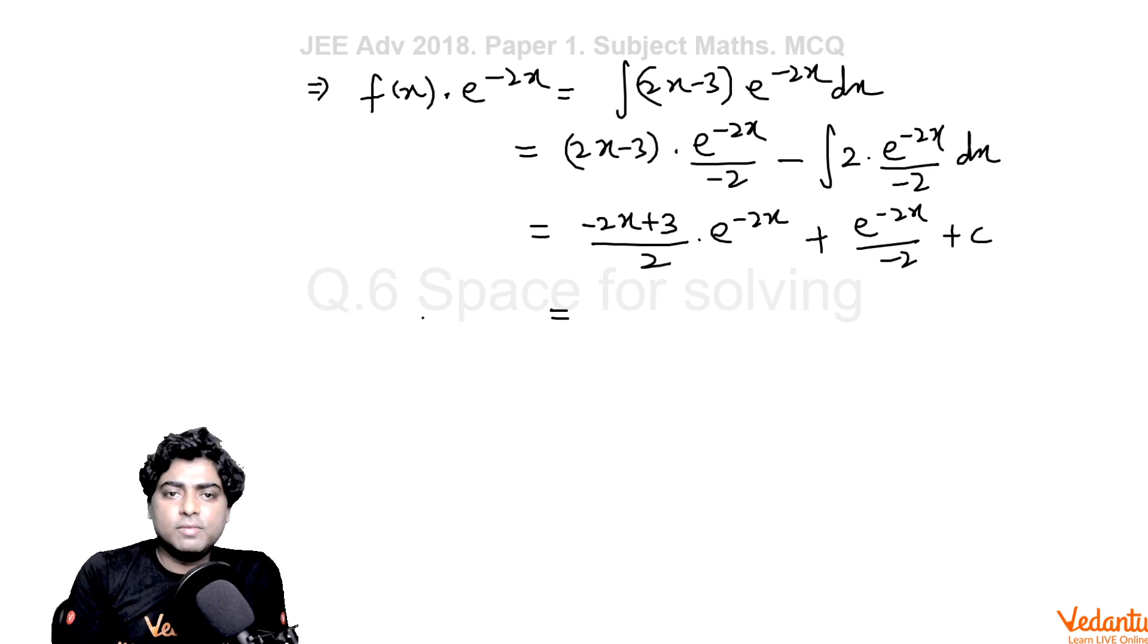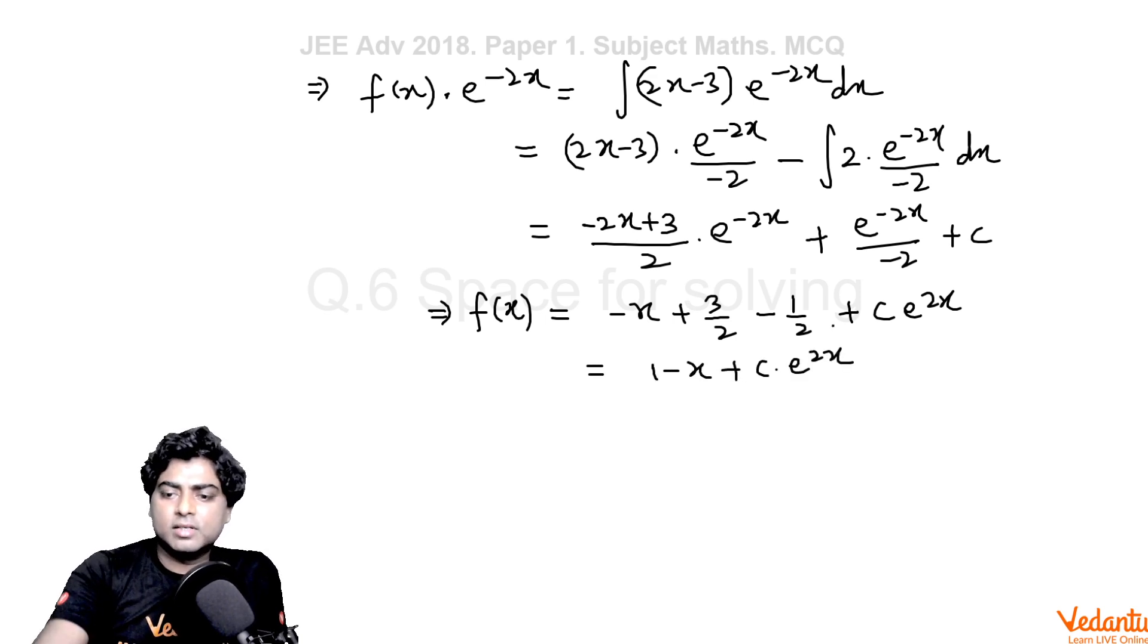If you multiply the entire equation by e^(2x), you will get f(x) as -x + 3/2 - 1/2 + c times e^(2x). Finally we can say 1 - x + c times e^(2x).